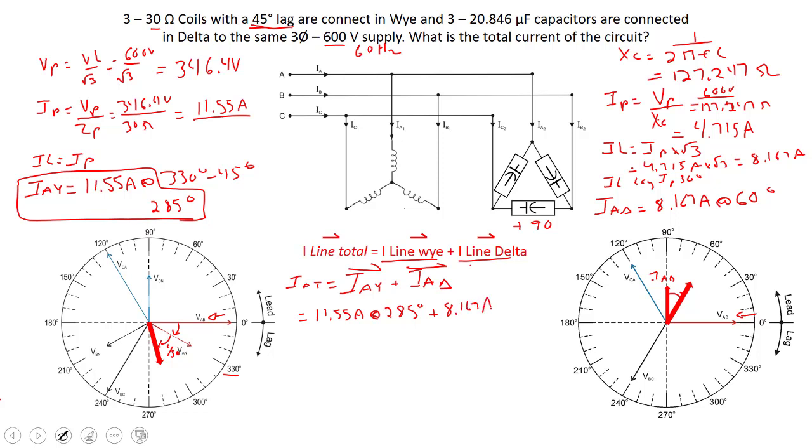And that should come to 8.167 amps at negative 30 which really means positive 330 degrees.